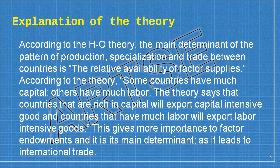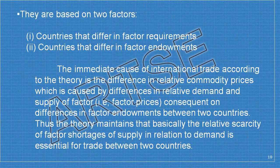According to the HO theory, the main determinant of the pattern of production, specialization, and trade between countries is the relative availability of factor supplies. Countries rich in capital will export capital-intensive goods, and countries with much labor will export labor-intensive goods. The immediate cause of international trade is the difference in relative commodity prices, which is caused by differences in relative demand and supply of factors — that is, factor prices — consequent on differences in factor endowments between two countries.